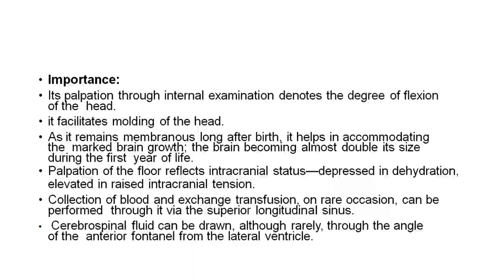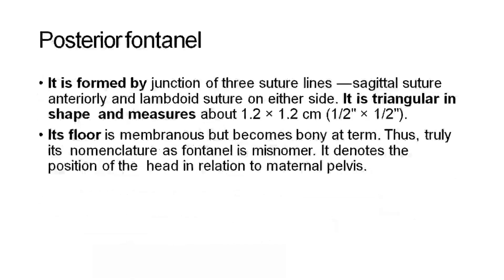Cerebrospinal fluid can be drawn, although rarely, through the angle of the anterior fontanelle from the lateral ventricle. The posterior fontanelle is formed by a junction of three suture lines: the sagittal suture anteriorly and lambdoid sutures on either side. It is triangular in shape and measures 1.5 x 1.5 cm. Its floor is membranous but becomes bony at birth. Thus, its nomenclature as a fontanelle is a misnomer. It denotes the position of the head in relation to the maternal pelvis.